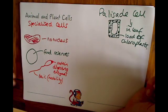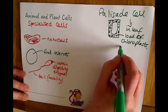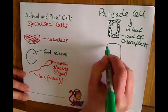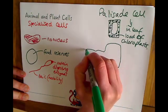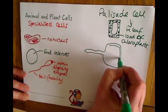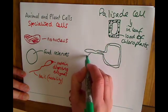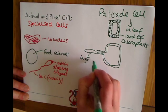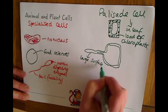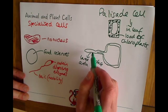On the other hand, you might have a root hair cell in the root, which will look a little something like this. It's going to have here a large surface area.